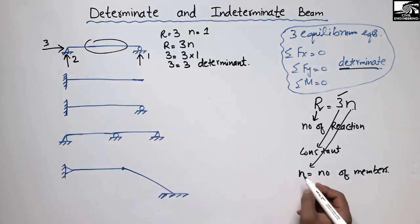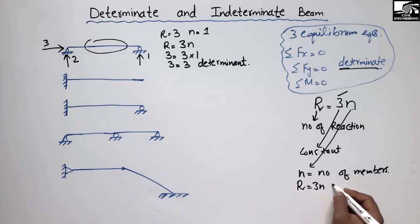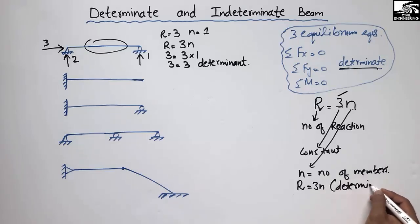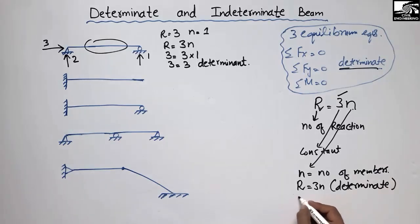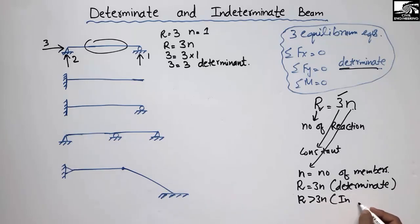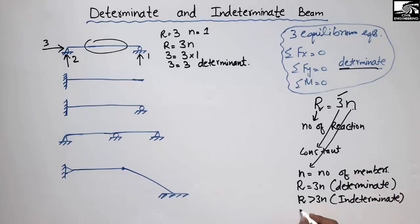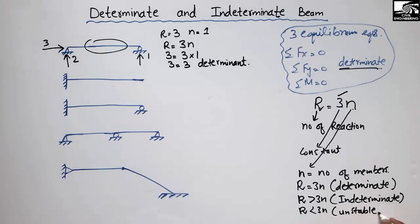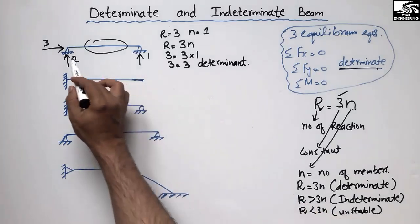To summarize the classification: if R is equal to 3N, the beam is called a determinate beam. If R is greater than 3N, it will be called an indeterminate beam. And if R is less than 3N, it will be called an unstable beam, meaning we need more supports for that beam.